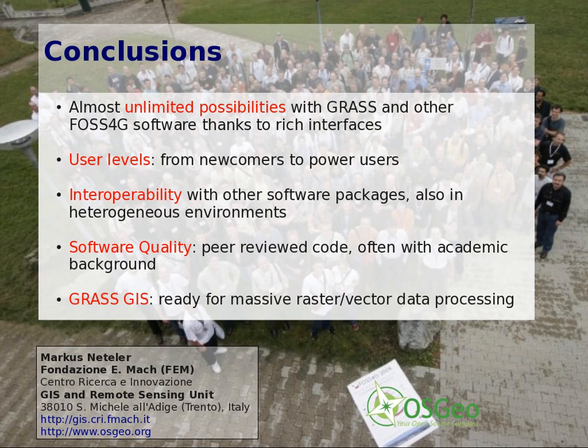In terms of software quality, the source code is peer-reviewed, following the academic model of scientific publication. For example, GRASS GIS software development has a dedicated mailing list in which every change to the software is published in real time. Several developers follow this list closely, analyze the changes, and comment to make further improvements. GRASS GIS, and likewise other open source GIS software, is ready for massive data processing, which is very important nowadays to address public health problems. In the second part of my presentation, I will illustrate this with some more examples.